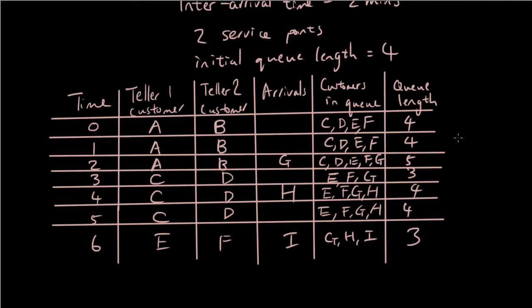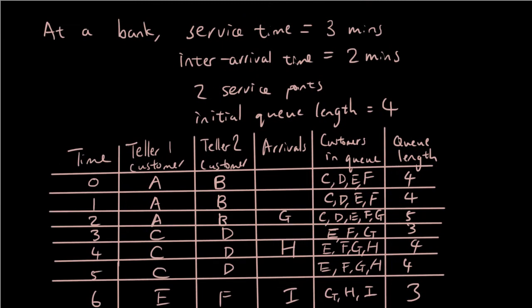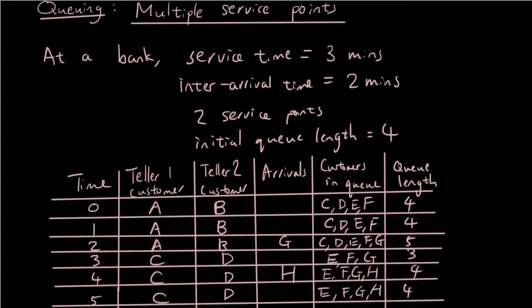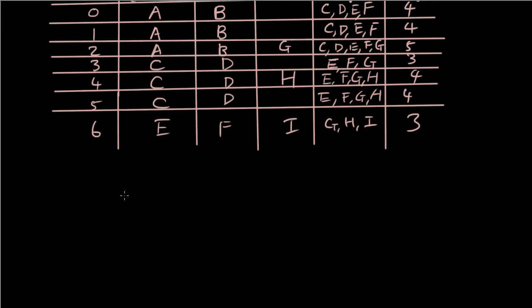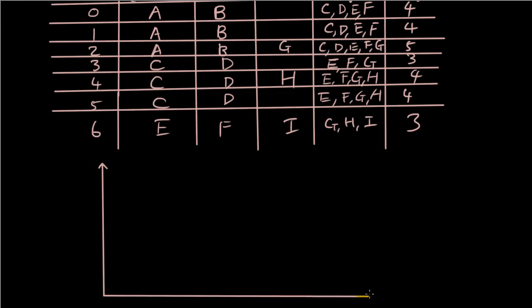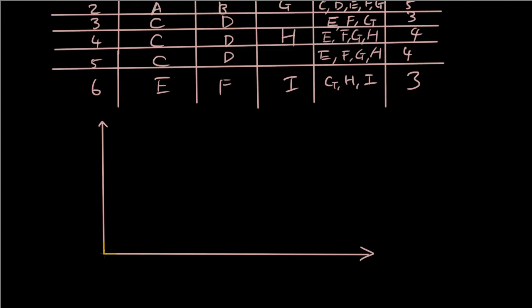Hopefully you're getting a bit of a pattern as to how to do it. Now I'm also going to draw a time plot graph. So we have the time on the X axis, customers on the Y axis. Let's put in zero, one, two, three, four, five, six. And because we're only going up to the sixth minute, let's do A, B, C, D, E, F, G, H, I.